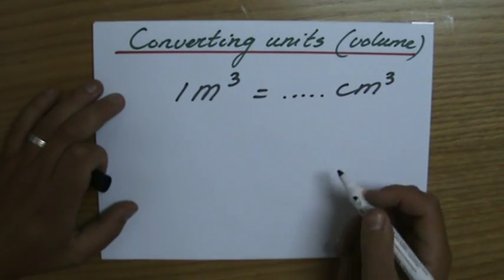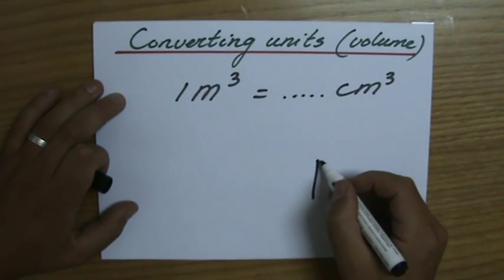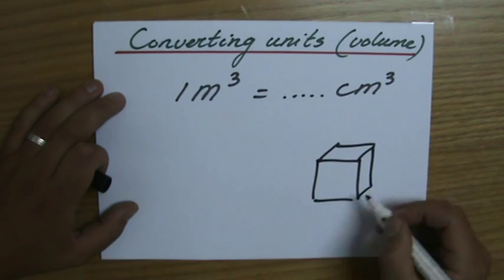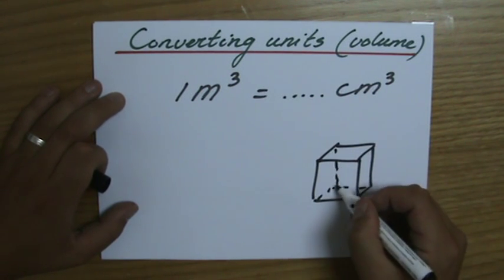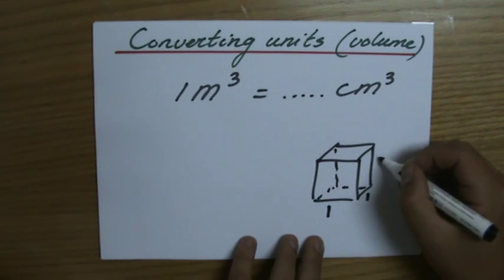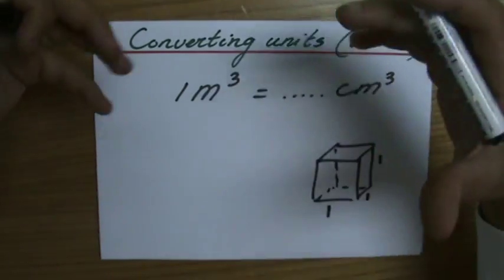Because this is what you have to take into account. If I would draw a cube, or sketch it like that, that's roughly a cube. So one meter cube, that is one meter times one meter times one meter. That's going to give you a meter cube.